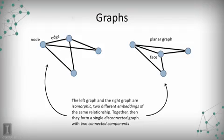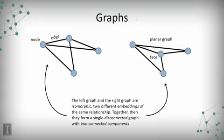If we think of an arrangement of eight nodes and ten edges as a single graph, that would be one graph consisting of two connected components. The entire graph containing both subgraphs would be a disconnected graph.